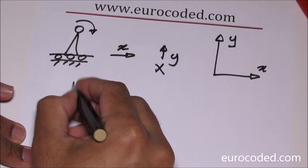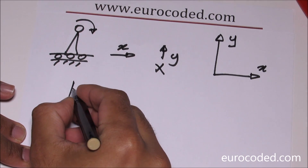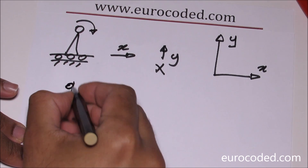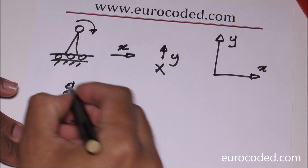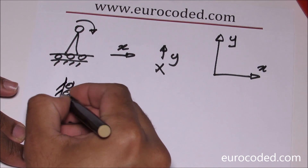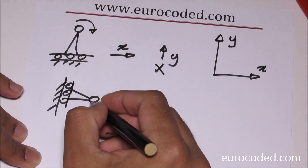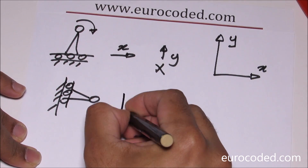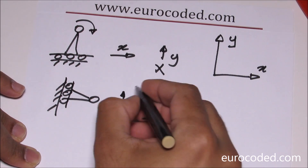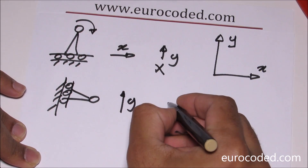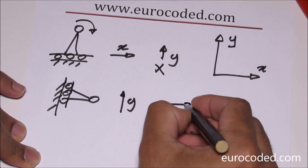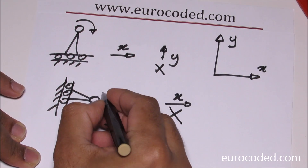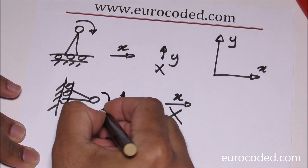The second type is a vertical roller, which works the same way but in the vertical direction. In this case, it does allow movement in the y direction but it does not allow movement in the x direction. It does allow rotation.